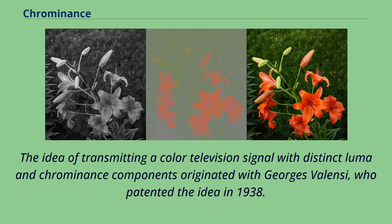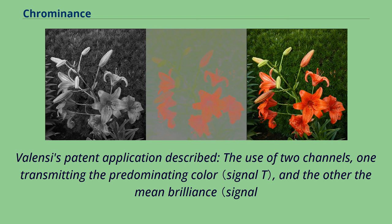The idea of transmitting a color television signal with distinct luma and chrominance components originated with Georges Valensi, who patented the idea in 1938. Valensi's patent application described the use of two channels: one transmitting the predominating color, and the other the mean brilliance signal.